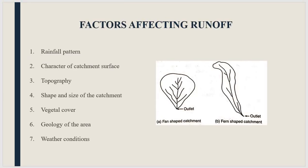Now we will see the factors affecting runoff one by one. The first factor is rainfall pattern. In a catchment area, if the rainfall is very heavy then runoff will be more, but if the intensity of rainfall is low then there may not be any runoff at all, because all the rainwater will be lost either by interception — the water which is stuck in the leaves or branches of a tree — or by infiltration or evaporation.